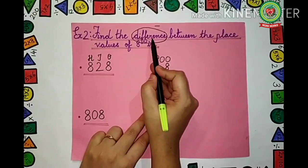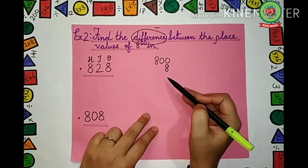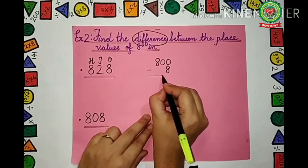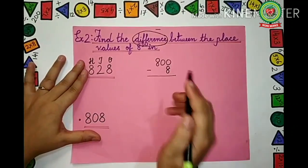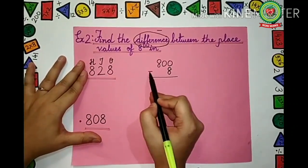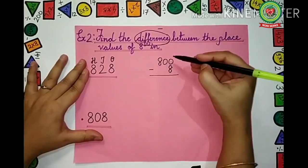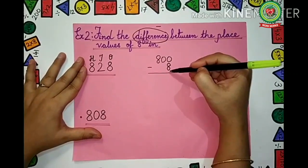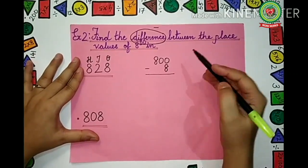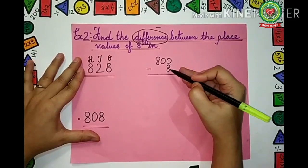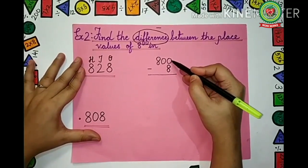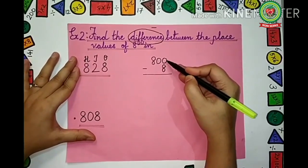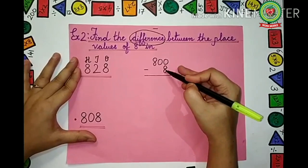It says difference, so we have to minus these two numbers — we will put a minus sign. See: 800 minus 8. First, we minus the right-side number in the 1's place: we have to minus 8 from 0. But 8 is the bigger number and 0 is the smaller number. We cannot minus the greater number from the smaller number, so 0 has to borrow from the next number.